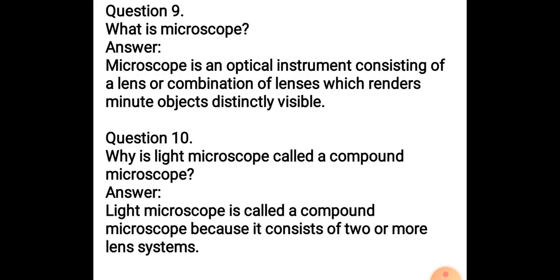Question 9: What is a microscope? It is an optical instrument consisting of lens or combination of lenses which renders minute objects distinctly visible. With the help of microscope you can see microscopic structures which we can't see with our naked eyes. Question 10: Why is light microscope called a compound microscope? Because it consists of two or more lens systems. You all must have seen the compound microscope and in that you've seen it consists of two or more lens systems which help in better magnification.